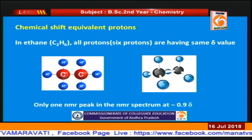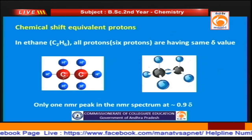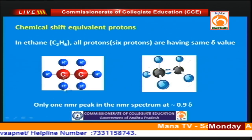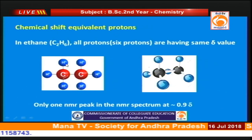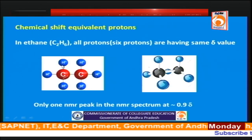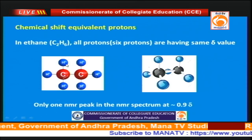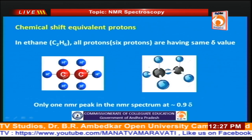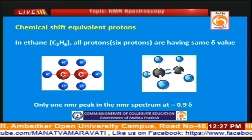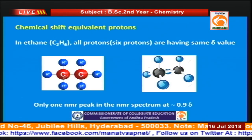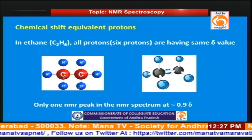The same is the case for ethane. In ethane we have two methyl systems connected by a C-C bond. The protons in one methyl system can be interchanged with the protons in the other group by symmetry operation. Therefore, all six protons present in the two methyl groups have the same δ value — they are all chemical shift equivalent protons, and we observe a peak in the spectrum at 0.9 δ.